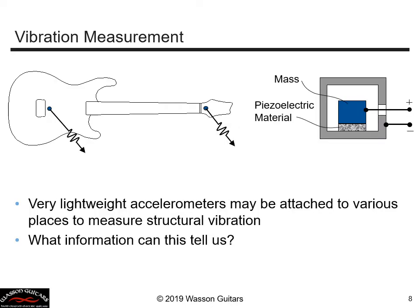To answer that question, we can attach accelerometers to the guitar and actually measure its vibration. An accelerometer is a small mass placed onto a piezoelectric crystal that produces an electrical output signal when it is strained. The signal output is proportional to the vibration acceleration of the small mass. We place one accelerometer onto the neck and a second one onto the body, and we may move these around to get an idea of the vibration mode shapes of the guitar.